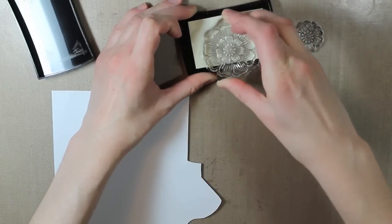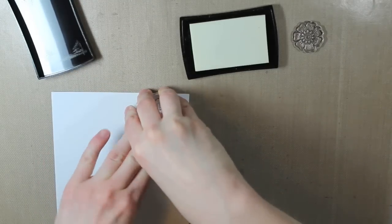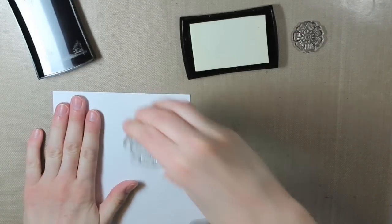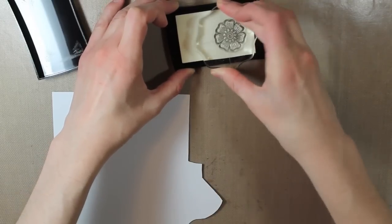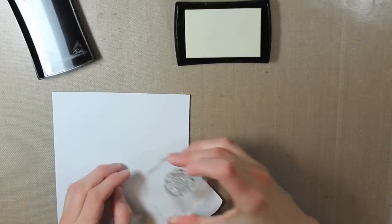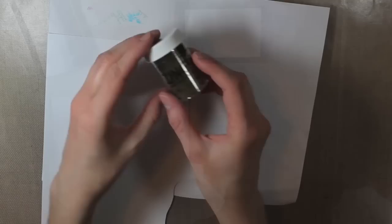So I am stamping two of these flowers with my Versamark ink on a piece of Coordination's 110 pound cardstock. And you saw me go over that with my powder tool which helps tremendously cut down on your static electricity when you're heat embossing.